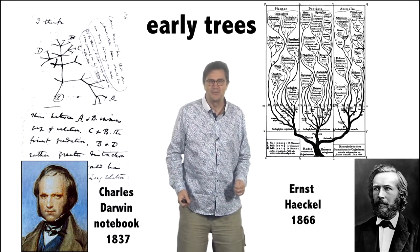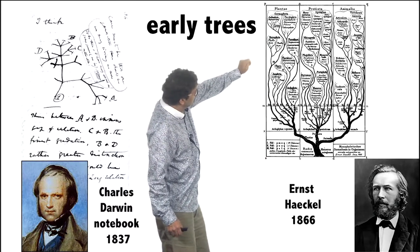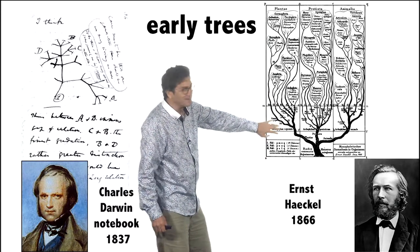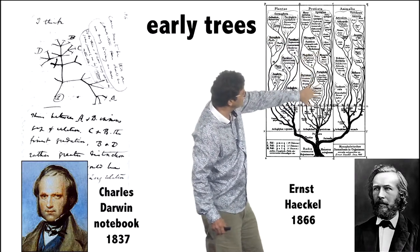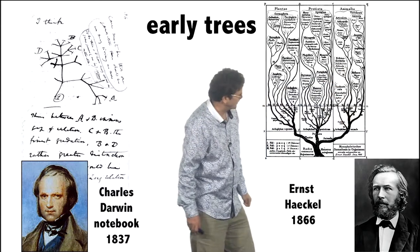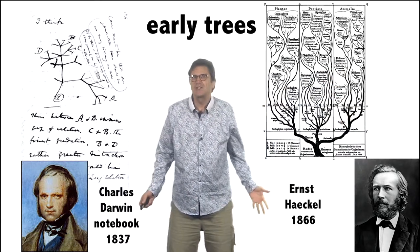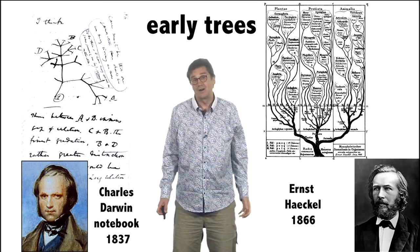A few decades later, a Darwin fan, Ernst Heckel, in 1866 produced this tree, in which it really looks like a tree now. And here we have plants in this group. Then we have protista, which are single-celled critters. And then we have animals over here. This is just the first attempts at trying to use a tree to understand our ancestry.